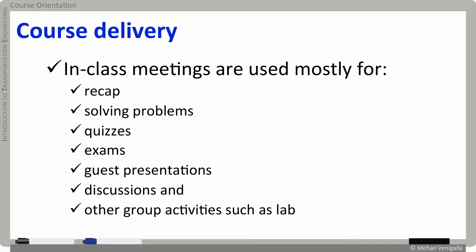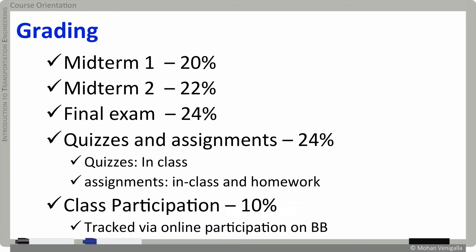Other group activities such as labs — that's what we are going to do in class. Here's a general outline of grading. There are going to be three tests; you can expect a test after every four or five weeks of instruction. The weightage of these tests increases as time goes by: midterm 1 is 20%, midterm 2 increases to 22%, and the final to 24%. Quizzes and assignments are combined into one group with a total weightage of 24% of the entire grade.